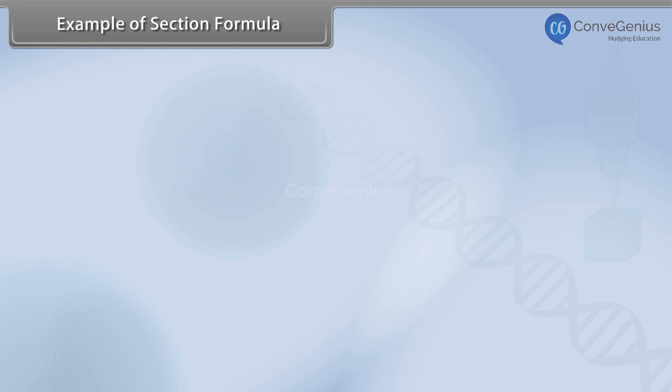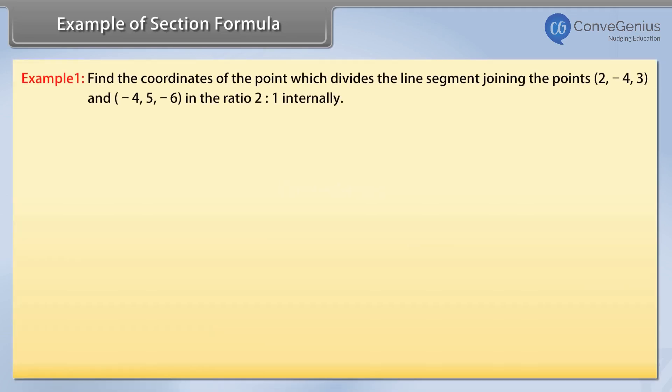Example of section formula. Find the coordinates of the point which divides the line segment joining the points (2, -4, 3) and (-4, 5, -6) in the ratio 2:1 internally.